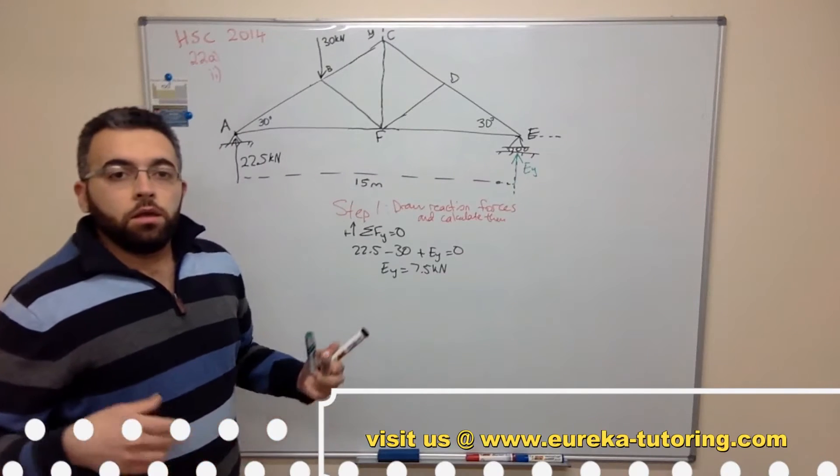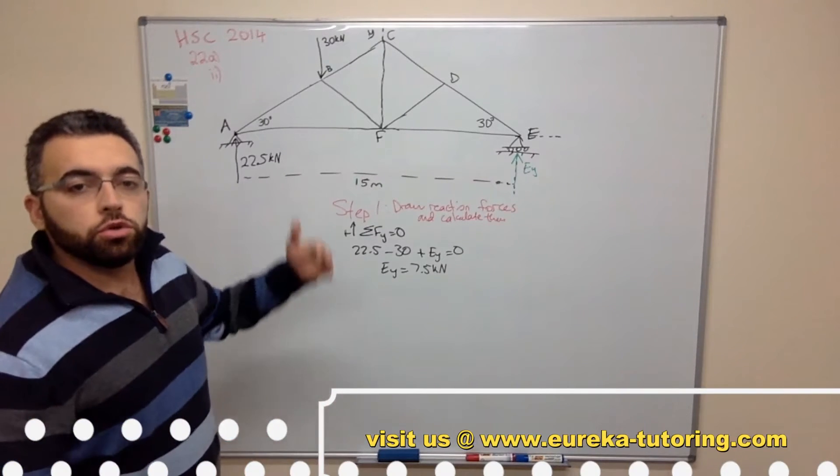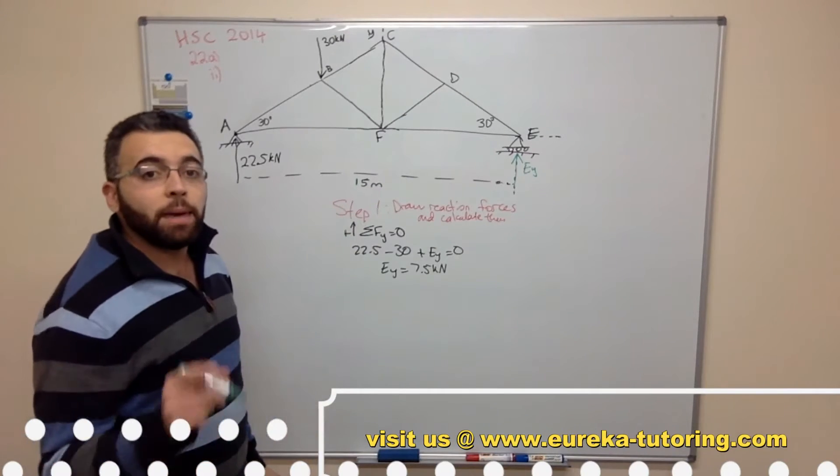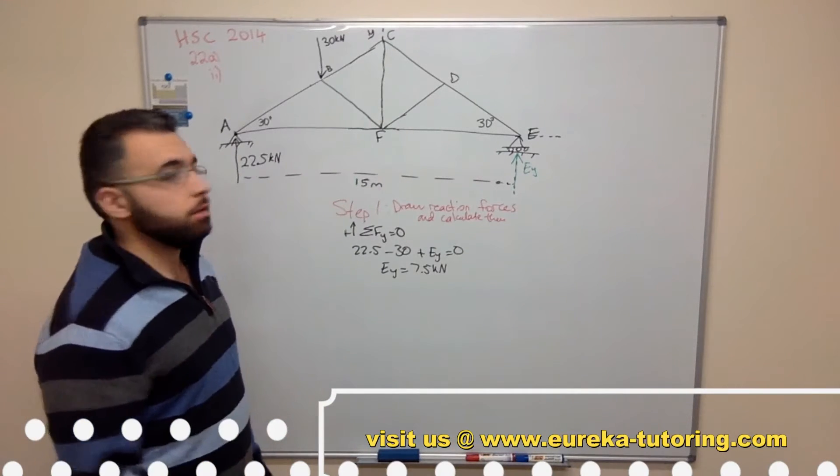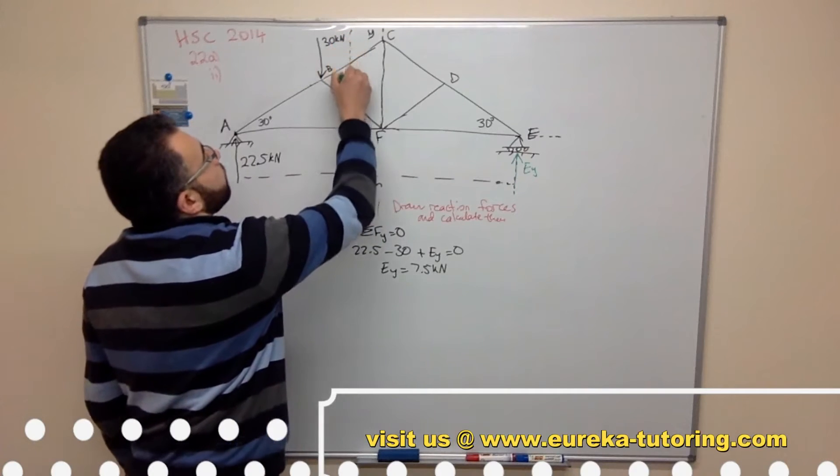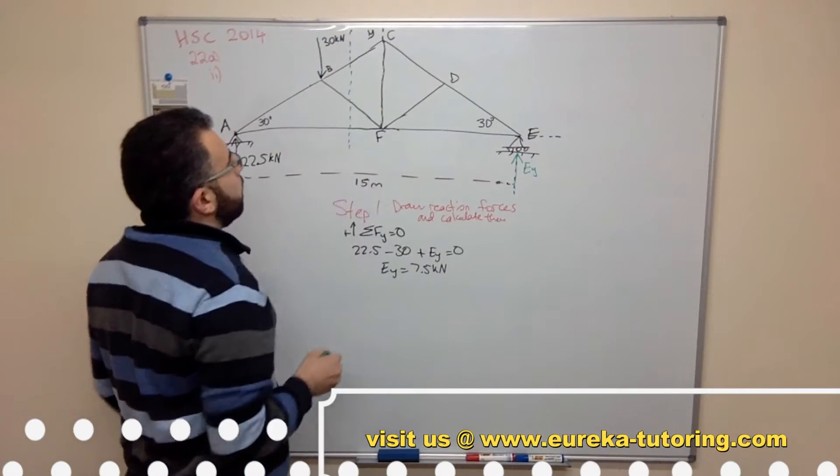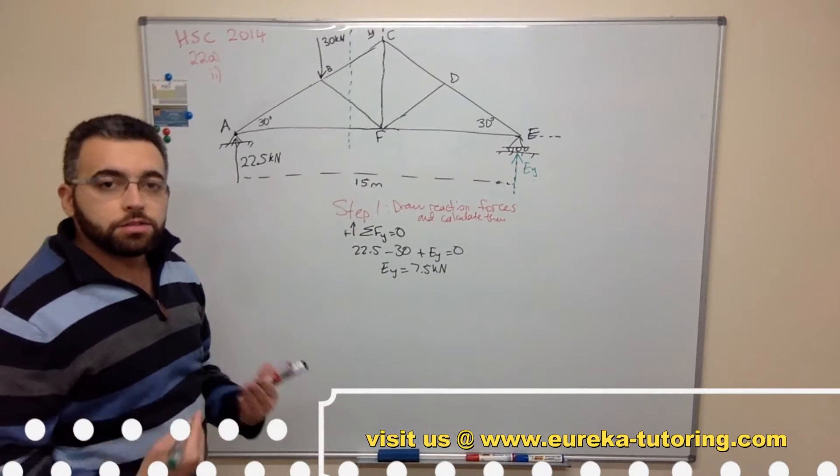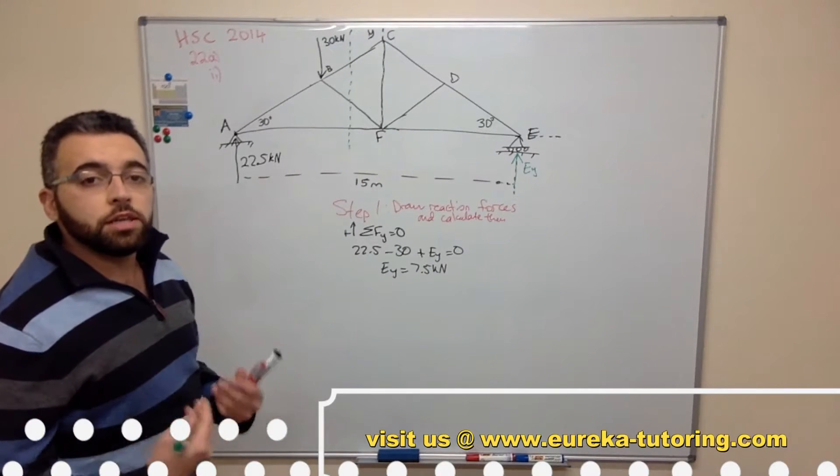Now as we said before, we need to use the method of sections to calculate the force in member BC. So I'm going to cut through member BC. DF we can worry about later. Now when you make a cut through the members you instantly create forces.